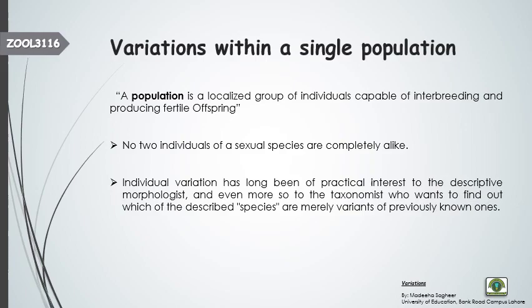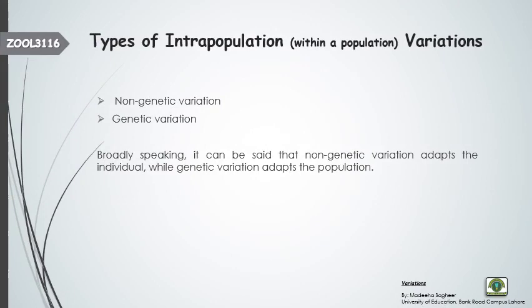Now, the types of intra-population variations — 'intra' meaning within — are the variations taking place within the population. Intra-population variations can be divided into two major categories: non-genetic variation and genetic variation.